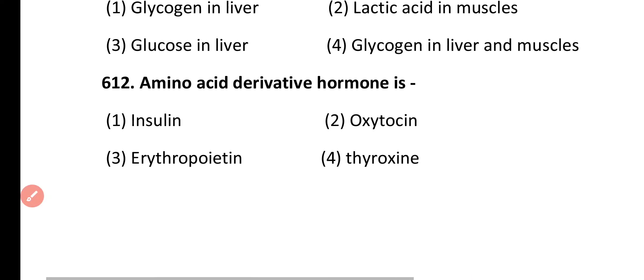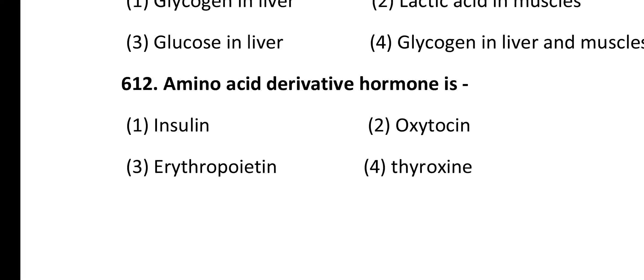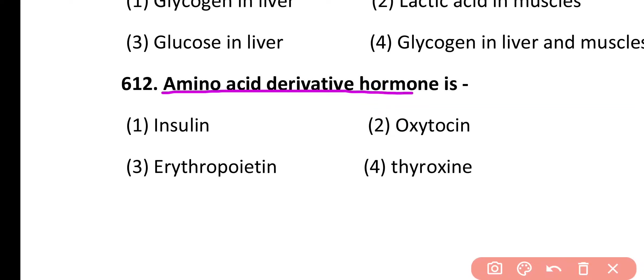Question 612. Amino acid derivative hormone is: insulin, oxytocin, erythropoietin, thyroxin. Correct answer is option 4. Thyroxin, which is produced by the thyroid gland, is an amino acid derivative hormone.